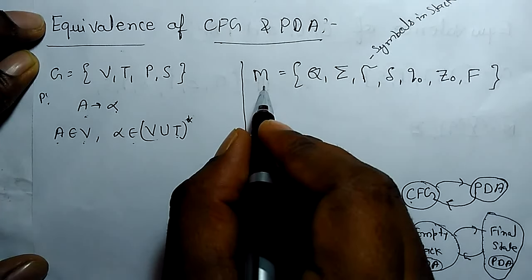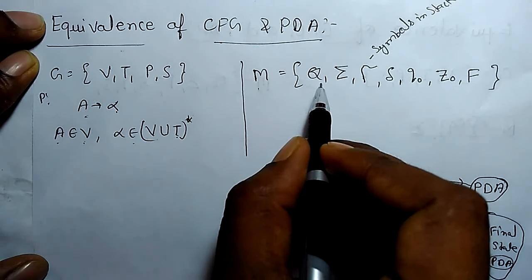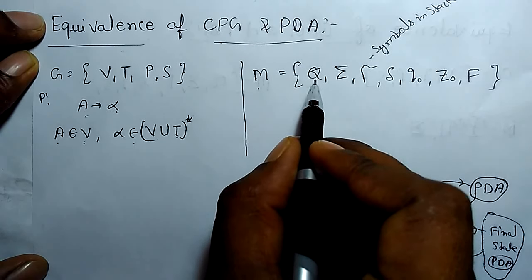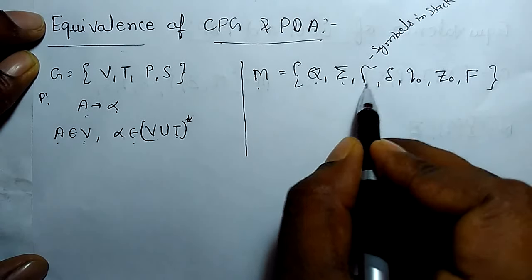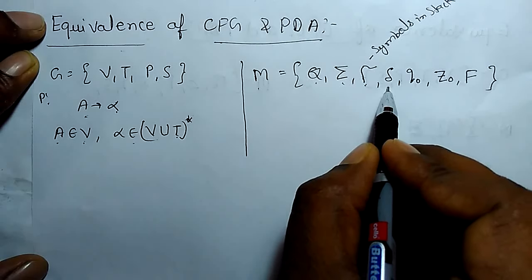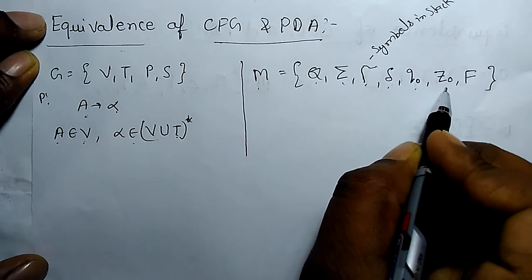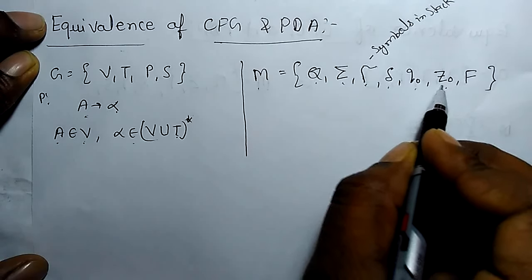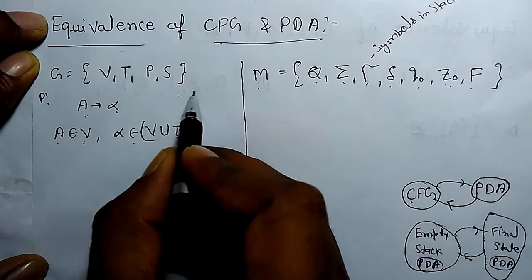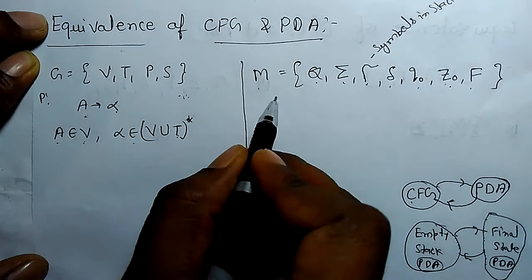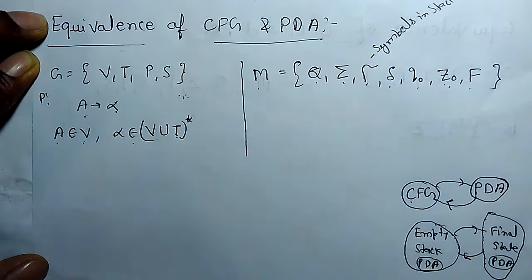There is a pushdown automata machine M which consists of: number of states, input symbols, tau symbols in the stack, transition function, the star symbol at the bottom of the stack, the first symbol inserted in the stack, and the final state. If we prove an equivalent machine for this grammar, then equivalence of CFG to PDA is proved.